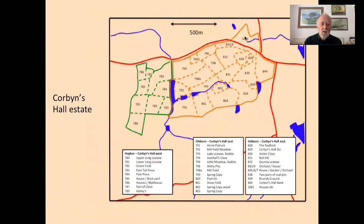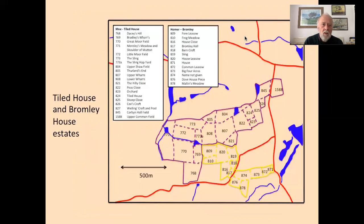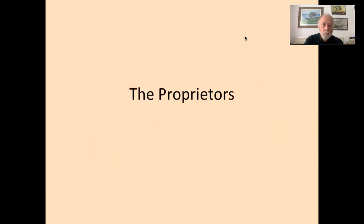The field boundaries in the Corbyns Hall estate, which in 1822 were still very rural with ornamental pools around a large house, speak of a rural past — with field names like Withy Pits, Pool Tailed Piece, Upper and Lower Long Liso, the Paddock, and Ashen Close. Similarly, the Tildhouse and Bromley House estates to the south have names like Upper and Lower Walls, Upper Shore Field, and Little Moor Fields, giving a clue as to what the parish was like in previous centuries.